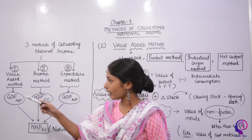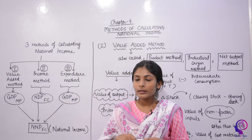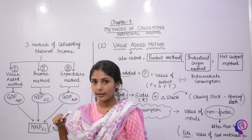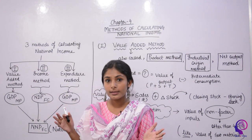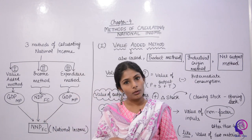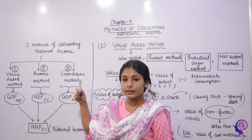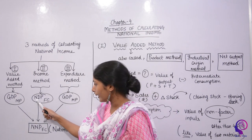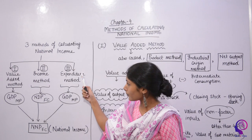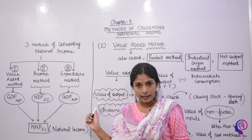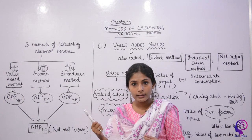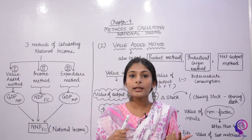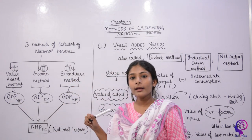The fact is that every method does not give you national income directly. In the Value Added Method, when you solve the question, the result will be GDP at Market Price. When I apply the Income Method, it will give you NDP at Factor Cost. In this way, the expenditure method also will not give you national income directly. As I discussed in the last lecture on aggregates of national income, you can see how we can convert these to national income.